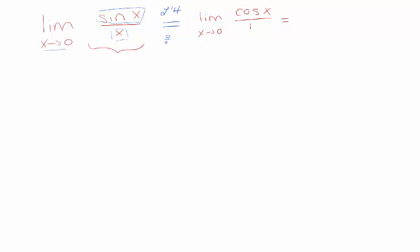And this limit is pretty easy. Cosine of 0 is just 1. So that means this limit is 1, which is something that we already knew, but we did it this time without drawing a bunch of triangles.